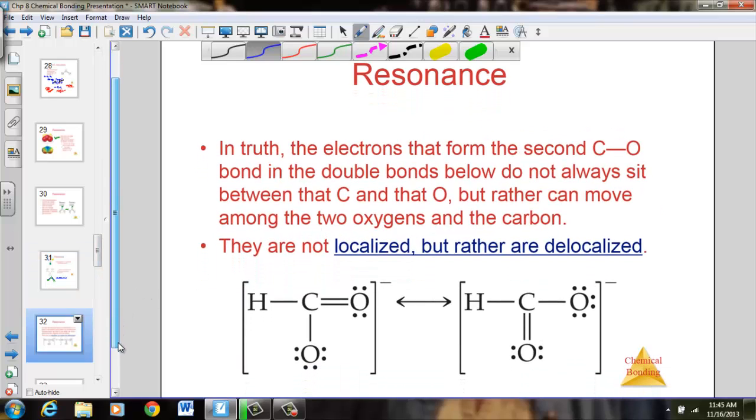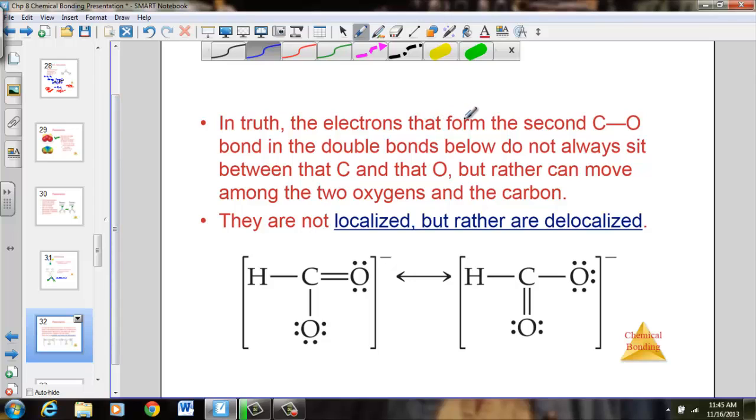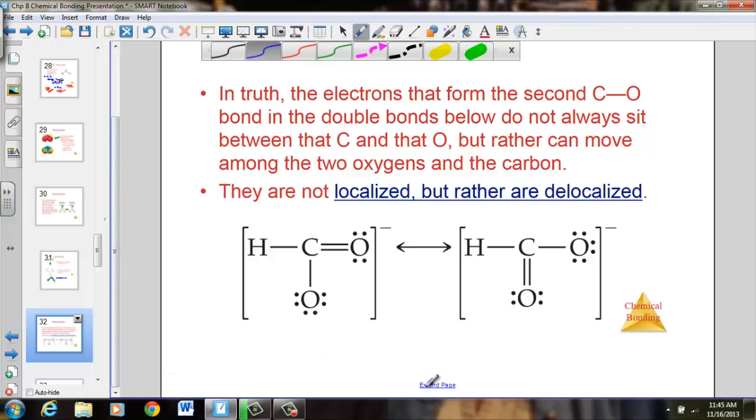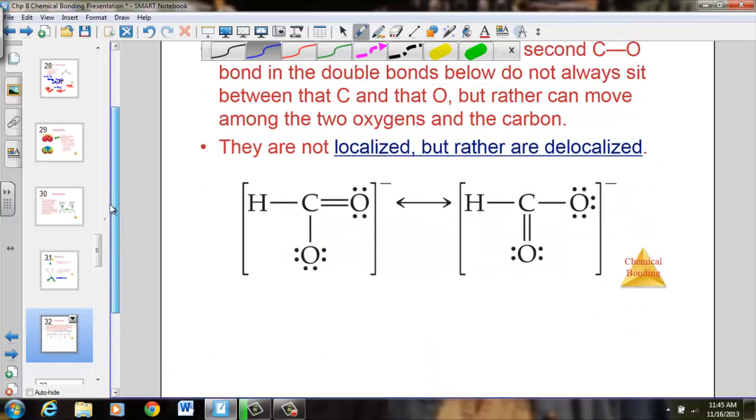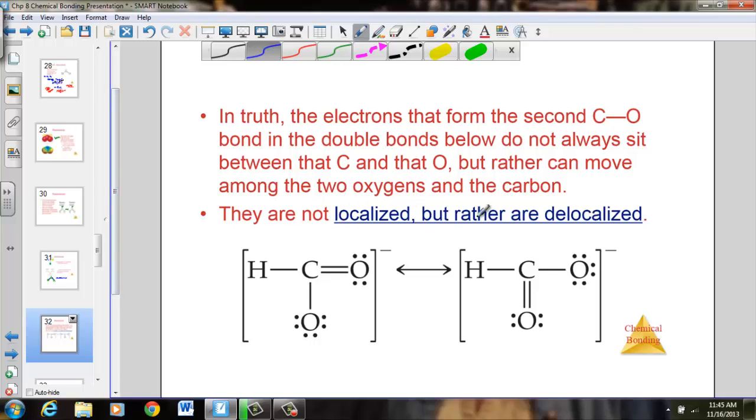The term resonance. It says, in truth, the electrons from the second CO bond and the double bonds below do not always sit between the carbon and oxygen, but rather move among the two oxygen and the carbon. They are not localized, but rather delocalized. This slide would have made better sense, and I should have started with the structure first. Let's go ahead and fill this part in. Localized, but rather are delocalized.